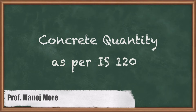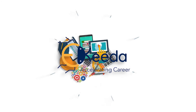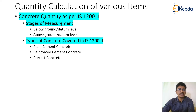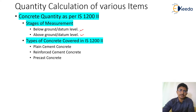Welcome to this course on certification in quantity surveying. Today we are looking into the provisions of IS code 1200, Part 2, related to concreting. The clauses cover all stages of measurement. The types of concrete covered include PCC (plain cement concrete), RCC (reinforced cement concrete), and precast or prestressed concrete. All clauses of this IS code are applicable to PCC, RCC, and precast concrete.